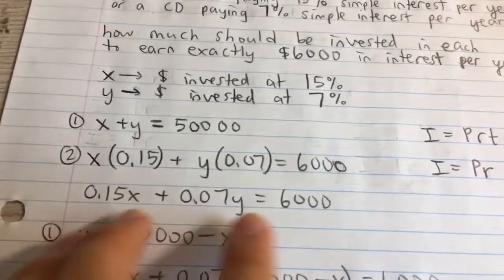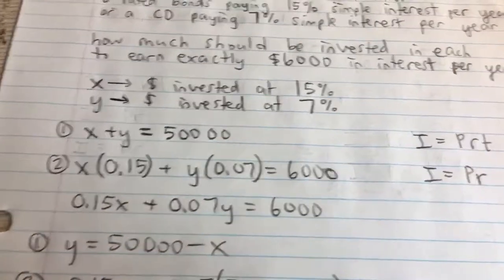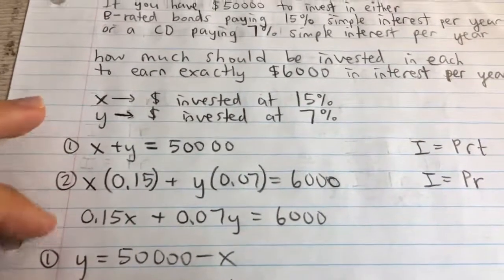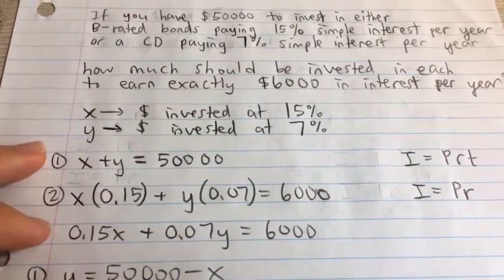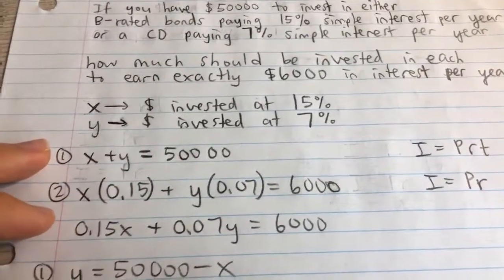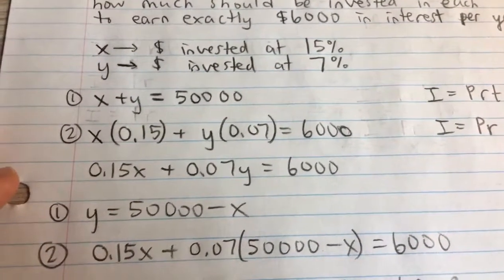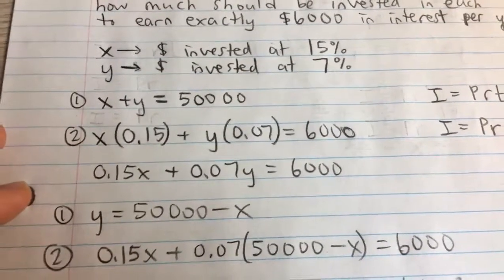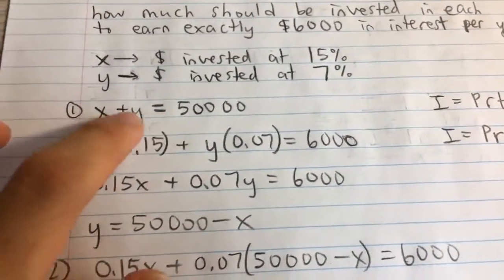If you rewrite this with the coefficients first, it looks like 0.15X + 0.07Y = 6000. Now we have a system of two equations we can solve for X and Y. We can use either substitution or elimination. I'll use substitution because we have fairly simple values.